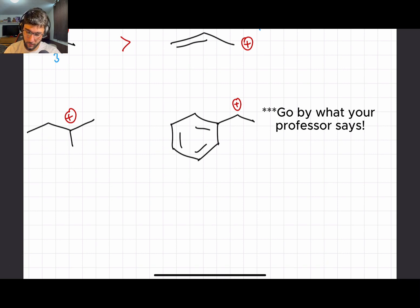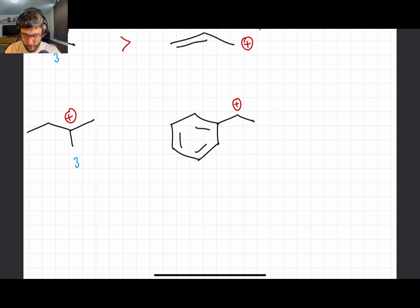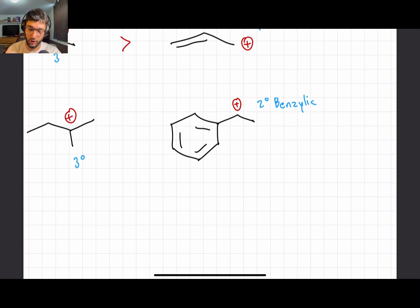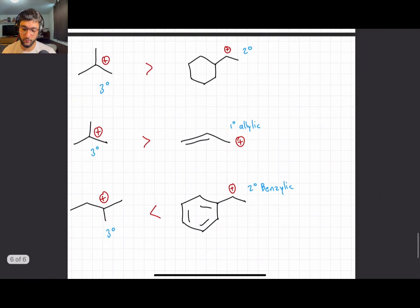Finally, we have another tertiary carbocation versus a secondary benzylic. Because the secondary benzylic has not only a lot of induction but also a lot of resonance, we know that the secondary benzylic is going to be more stable than the tertiary carbon.